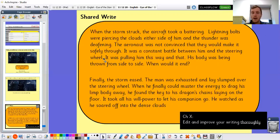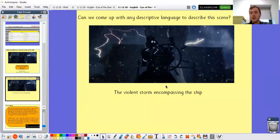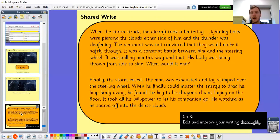Have a go at writing your own version of those events. Perhaps try to use some of that descriptive language you used before. So I used some of the ideas about the violent storm encompassing the ship in my writing there, and you can try to do the same. As always, once you've finished it, can you edit anything? Can you edit for spellings? Can you edit for capital letters and full stops? Have you used paragraphs in your writing? Have you always used the most appropriate vocabulary?